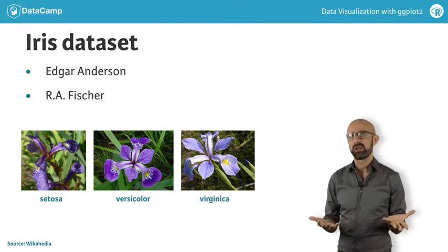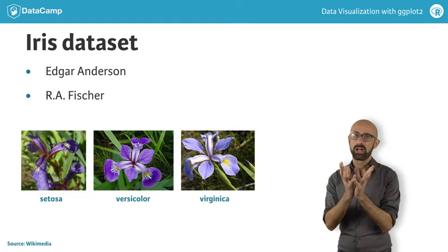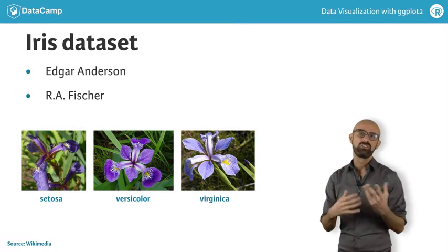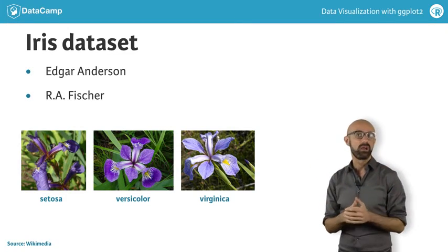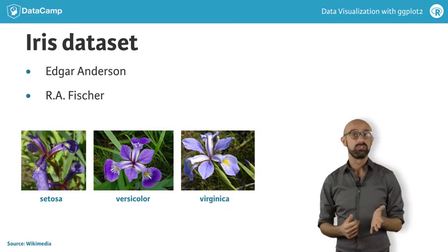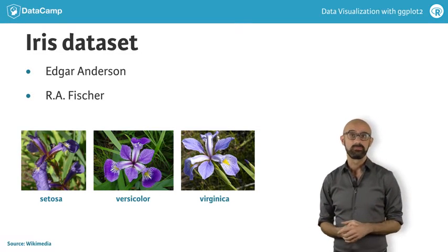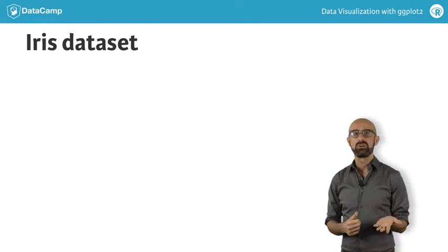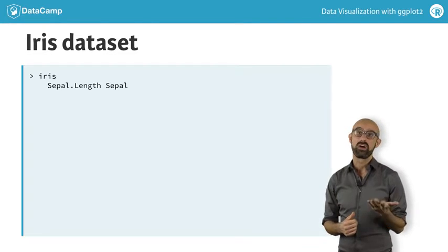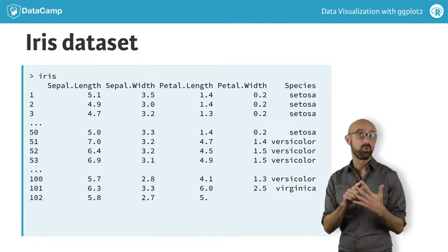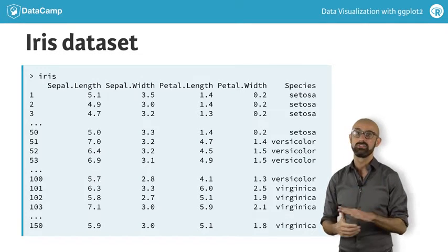You're probably familiar with what petals are — they're the colorful part of a flower. Sepals are the outer leaves of a flower; they're typically green, but in this case they're also colorful. There are 50 specimens of each species. The data is stored in an object called iris. There are five variables: the species and one for each of the properties that were measured.